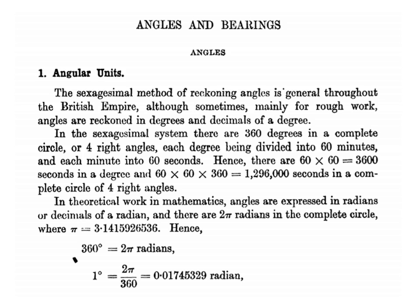So in a complete circle it consists of 4 right angles. In theoretical work, angles are expressed in radians or decimals of a radian, and there are 2π radians in a complete circle where π equals 3.1415. Hence 360 degrees equals 2π radians, therefore 1 degree equals 2π divided by 360, which is equal to 0.017 radians.